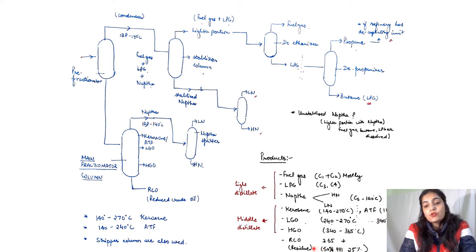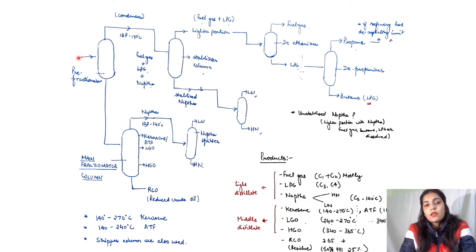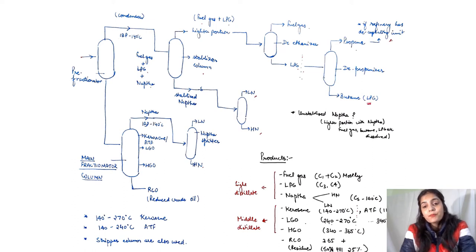Our major task now is to convert this residue into meaningful products. The end products are divided into light distillate, middle distillate, heavy distillate, and some low value products. So far we have obtained light distillates — fuel gas, light gas, and naphtha from the pre-flash fractionator — and middle distillates — kerosene, light gas oil, and heavy gas oil from the main fractionator column.